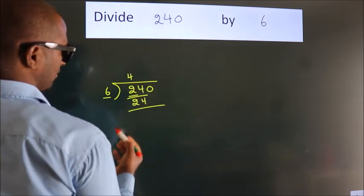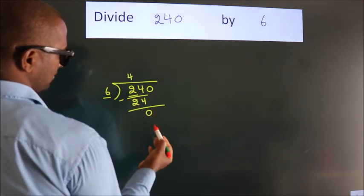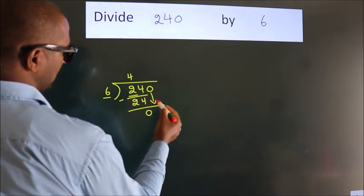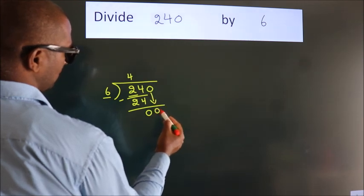Now we should subtract. We get 0. After this, bring down the beside number. So 0 down. So 0.